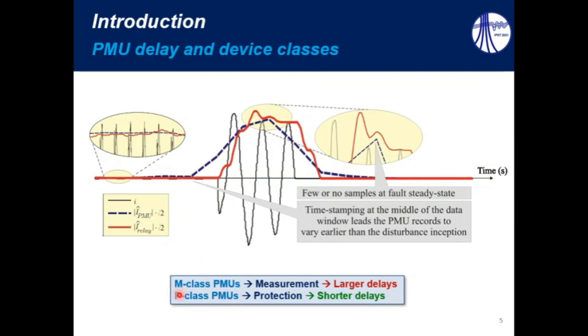And we have also P-class PMUs, which use less filtering, but they will present shorter delays. They are more accurate than protective relays during the phasor estimation process, but they still have delays which are shorter than those verified in M-class PMUs.